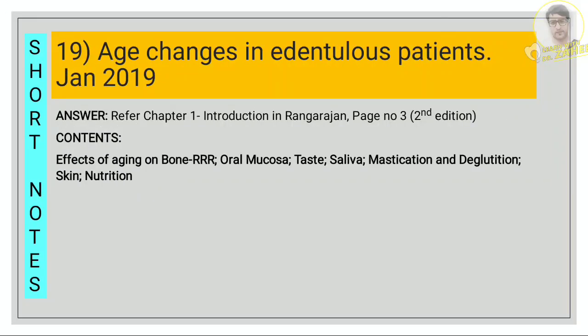For age changes in the edentulous patient, refer chapter 1, page number 3. Write about the effect of aging on bone — specifically mention residual ridge resorption (RRR) — and then write about the effect of aging on oral mucosa, taste, saliva, mastication, deglutition, skin, and nutrition.